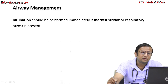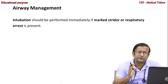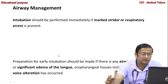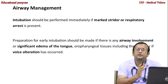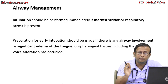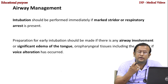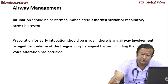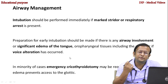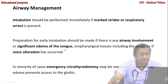For airway management: intubation should be performed immediately if marked stridor or respiratory arrest is present. Preparation for early intubation should be made if there is any airway involvement, significant edema of the tongue or pharyngeal tissues including uvula, or if voice alteration has occurred. In a minority of cases, emergency cricothyrotomy may be required if upper airway edema prevents intubation.